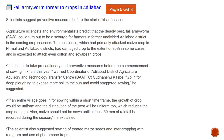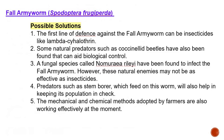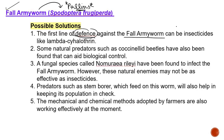Let's understand the Fall Army Worm. Remember its scientific name for prelims. Possible solutions include insecticides like lambda-cyhalothrin as the first line of defense. Some natural predators like carabid beetles have been found that can aid biological control. A fungal species called Nomuraea rileyi has also been found to infect the Fall Army Worm, though natural enemies may not be as effective as insecticides.